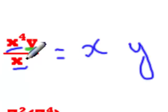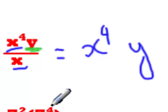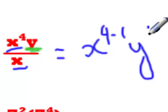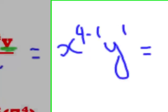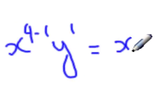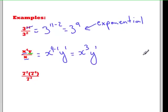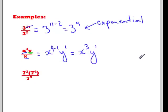The exponent from the X portion in the numerator is 4, and in the denominator — remember, if there's nothing there, it's a 1. And the exponent from the Y is 1. When we simplify, this works out to be X to the 3, and then Y to the power 1. But remember, whenever you have an exponent of the power 1, we usually don't write it.